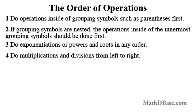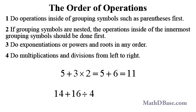4. Do multiplications and divisions from left to right. The first expression that we looked at is equal to 11, since we should multiply 3 and 2 first to get 6, then add 5. Given 14 plus 16 divided by 4, divide 16 by 4 first to get 14 plus 4 and a sum of 18.